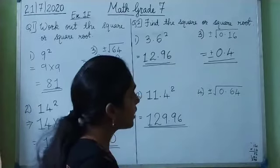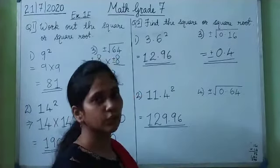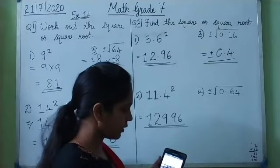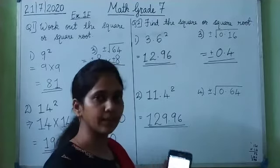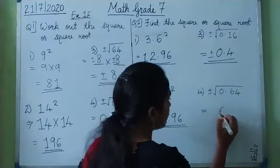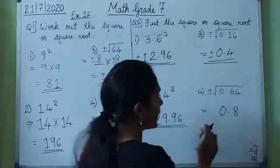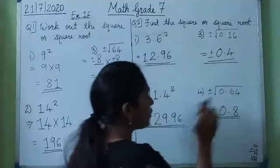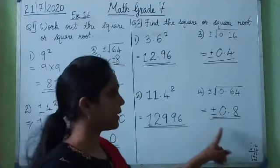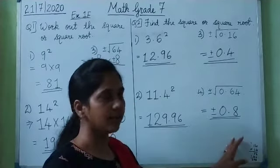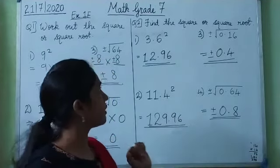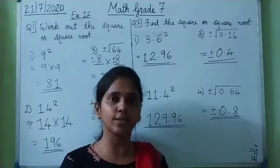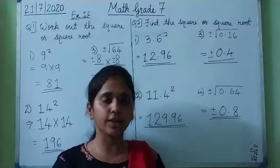The fourth one: the square root of 0.64. The square root of 0.64 is 0.8. Again this is plus or minus, so we put a plus or minus sign. The square root of 0.64 is either plus 0.8 or minus 0.8. So this covers finding square and square roots of numbers with and without a calculator.